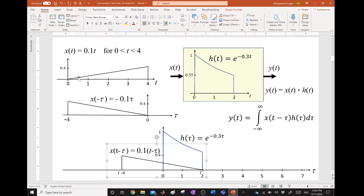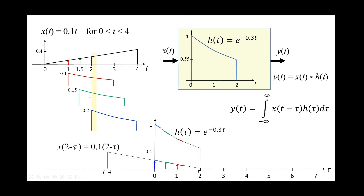We are taking 3 instants and shifting to t=2. The system already sees this impulse and already saw earlier ones. At 1 o'clock, this impulse hit the system and the system outputs the impulse response. At 1:30, this part of the input hit the system and the system outputs the impulse response multiplied by the amplitude 0.15 times 1, giving 0.15. At 2 o'clock, the impulse is 0.2 multiplied by the impulse response of 1, giving 0.2.